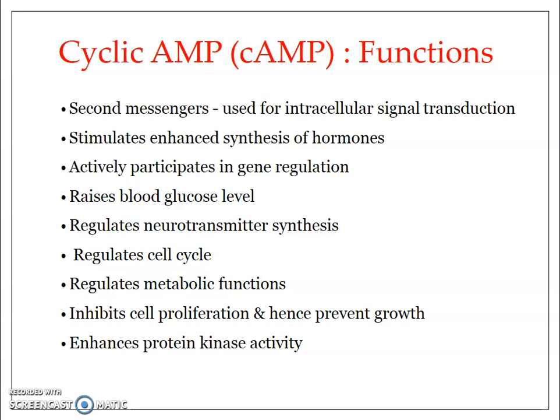Cyclic AMP also plays a role in cell cycle regulation: during the G1 phase there is an increase in intracellular cyclic AMP concentration, and as the cell enters S phase, G2 phase, and mitotic phases, the cyclic AMP concentration comes down. It regulates metabolic functions such as glycogenolysis and lipolysis (fat mobilization), and it inhibits cell proliferation and prevents growth.